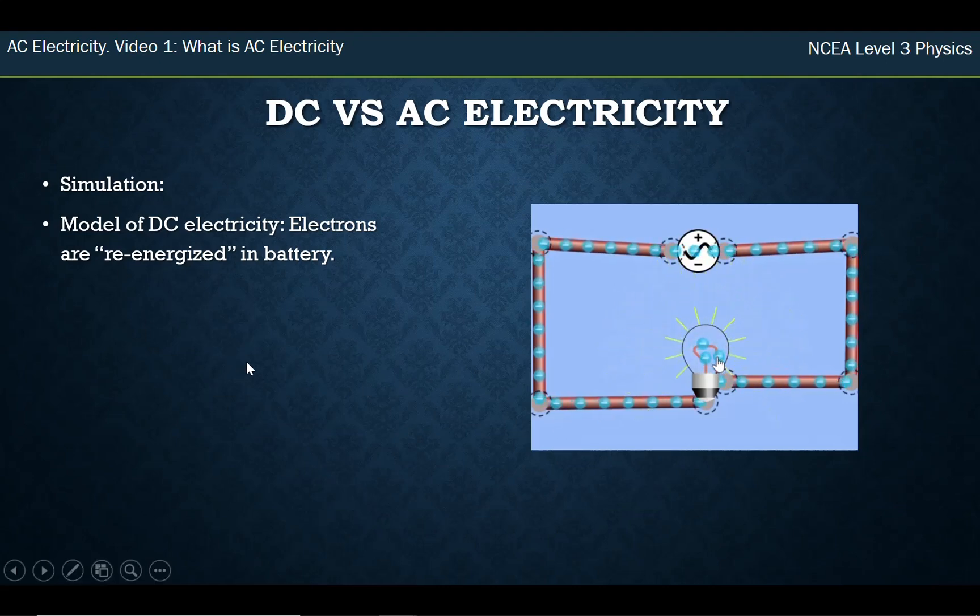So our model that we had of the battery re-energizing these electrons no longer holds true. And what I want you to think about instead is that this can play with people a bit in their heads and they think well hang on a second, are you telling me that the power station makes the electrical energy but those electrons never make it to my house and yet I can turn my lights on and charge my phone and put the dishwasher on? How does that work? How does the energy get to my house?